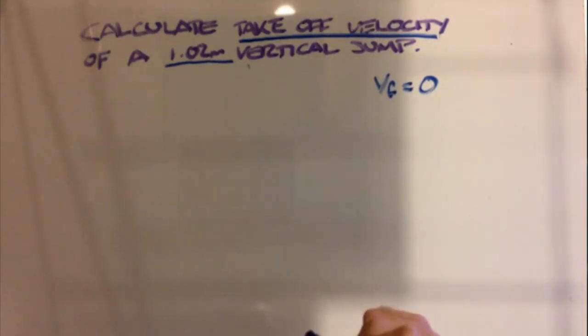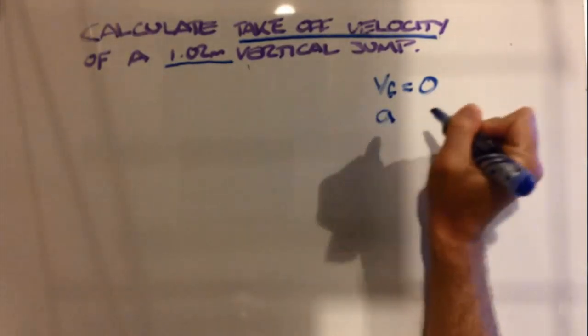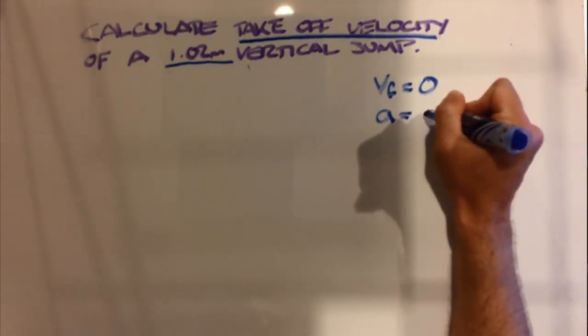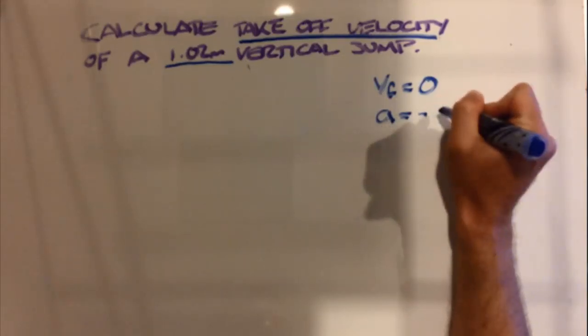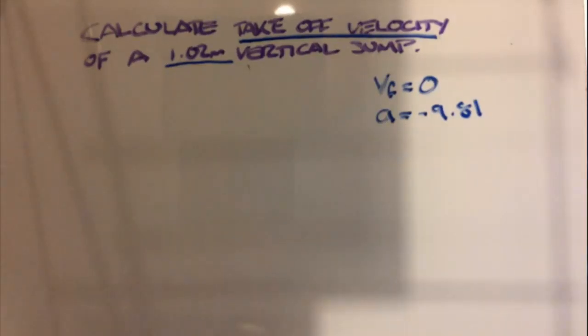We also remember when we are in the air we are being affected by gravity, and so that is going to be our acceleration. If you remember, gravity acting on us as acceleration is negative 9.81.